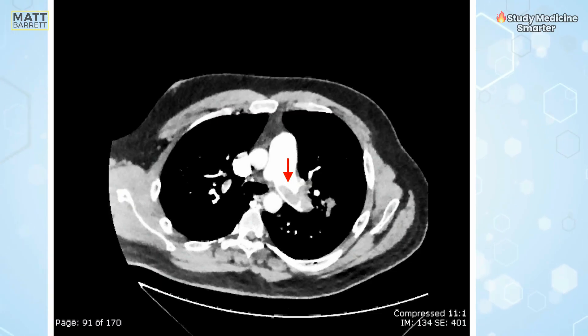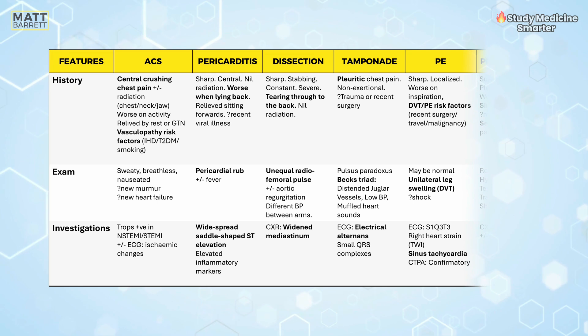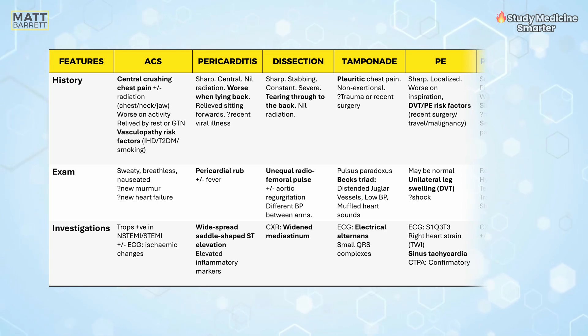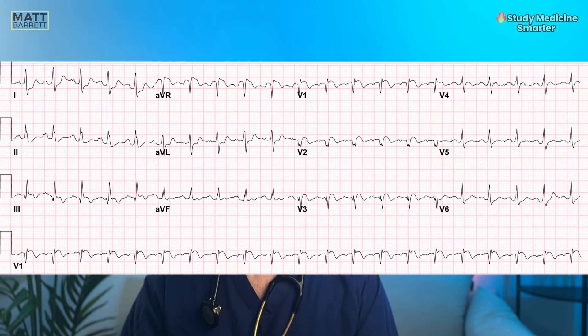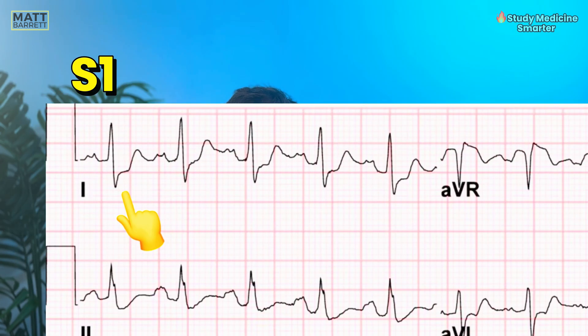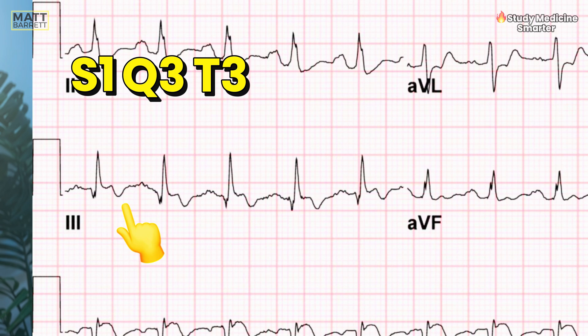Moving on to pulmonary embolism — a clot in the lung. This could be a huge clot like a saddle embolus sitting in the great pulmonary artery, or it can affect the smaller branches supplying areas of lung tissue. PE typically gives you a pleuritic chest pain, worse on breathing in. It's non-exertional and you expect to see risk factors for a PE. Definitely think of this if you see any reference to a DVT. An ECG may show the rare finding of S1Q3T3, but more likely the patient will be in sinus tachycardia.